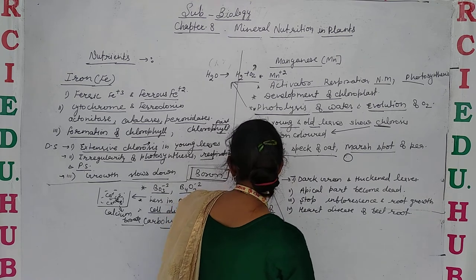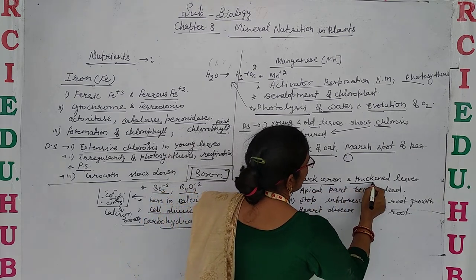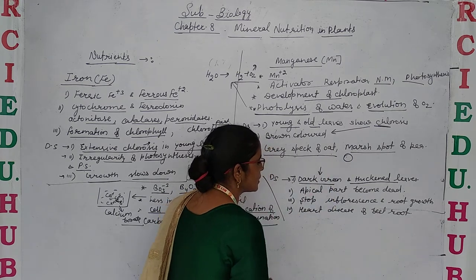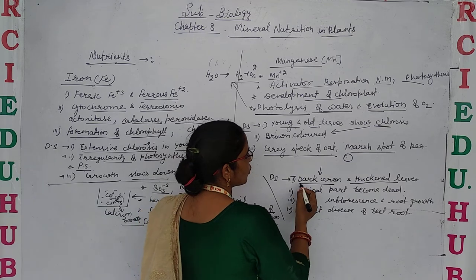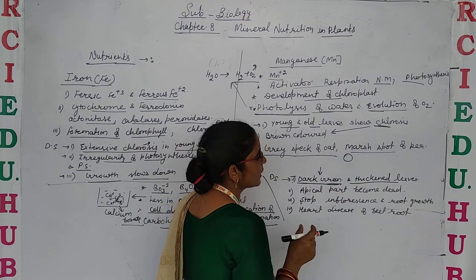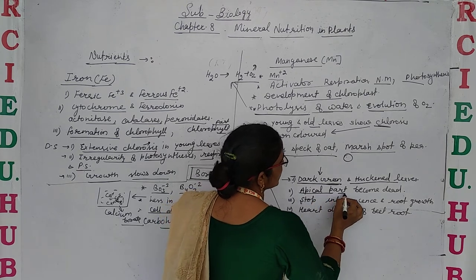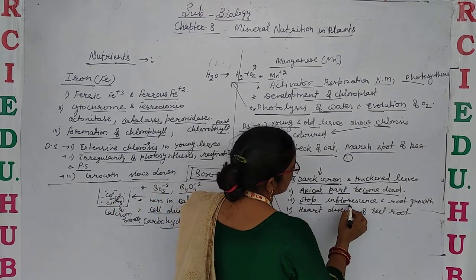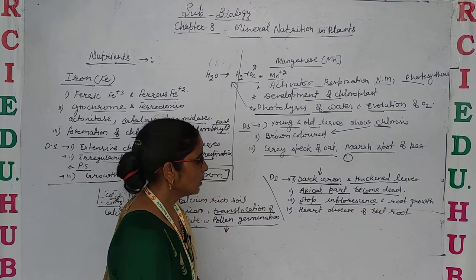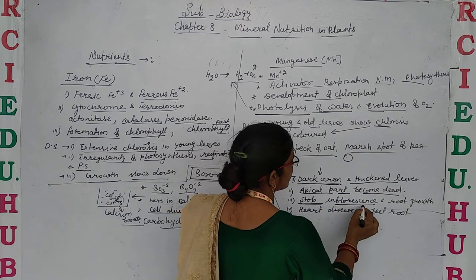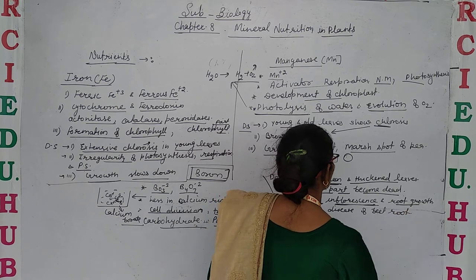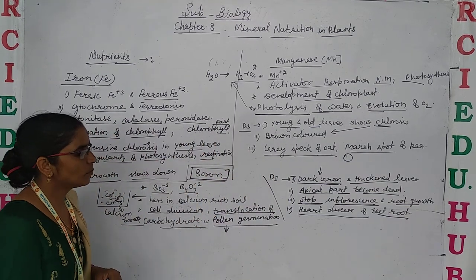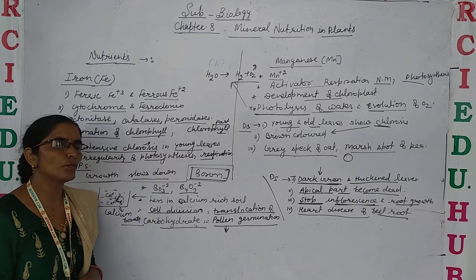Deficiency symptoms of boron: leaves become dark green and thickened — similar to phosphorus deficiency. The apical parts of the plant become dead, which stops inflorescence. Boron deficiency also affects the growth of roots. One main disease caused is heart rot disease of beetroot, which shows brown or yellow colored patches in the beetroot.